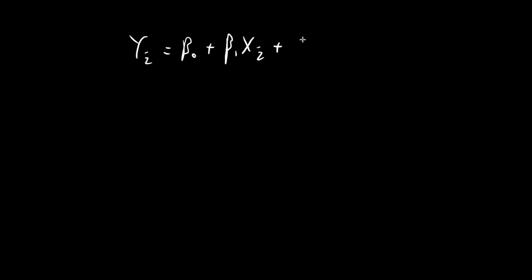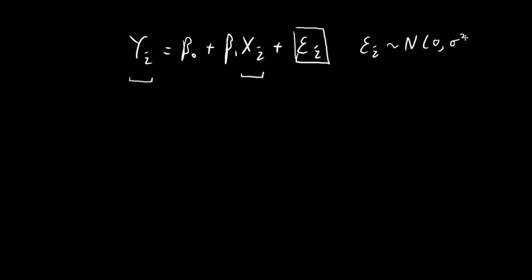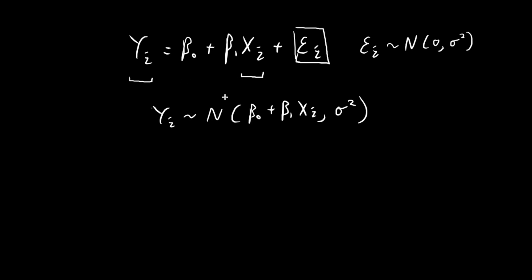The y terms are random variables because in simple linear regression, we assume the y terms are related to the x terms in a specific way, and we assume we already have access to the x terms but still don't know what the y terms are. The randomness comes from the error term, which we assume follows a normal distribution with mean 0 and variance σ². This means the y term also follows a normal distribution with mean β₀ + β₁xᵢ and variance σ².